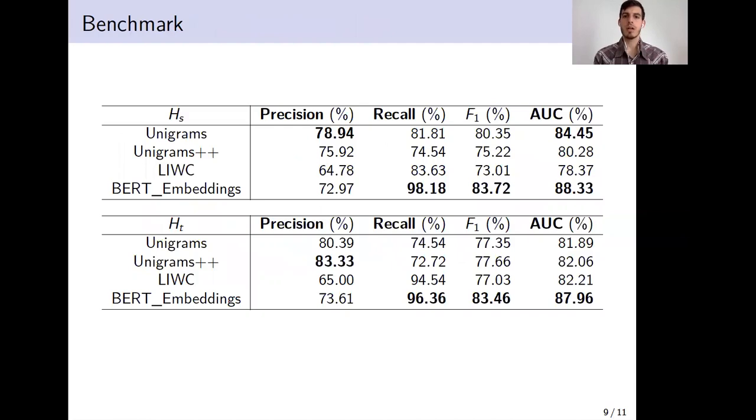Finally, as stated before, we train different classification models with different features using the two automatically derived sets. Overall, a higher recall is obtained when the model is trained using the posts collected by the first heuristic, while a higher precision is achieved by the models trained with the second heuristic.